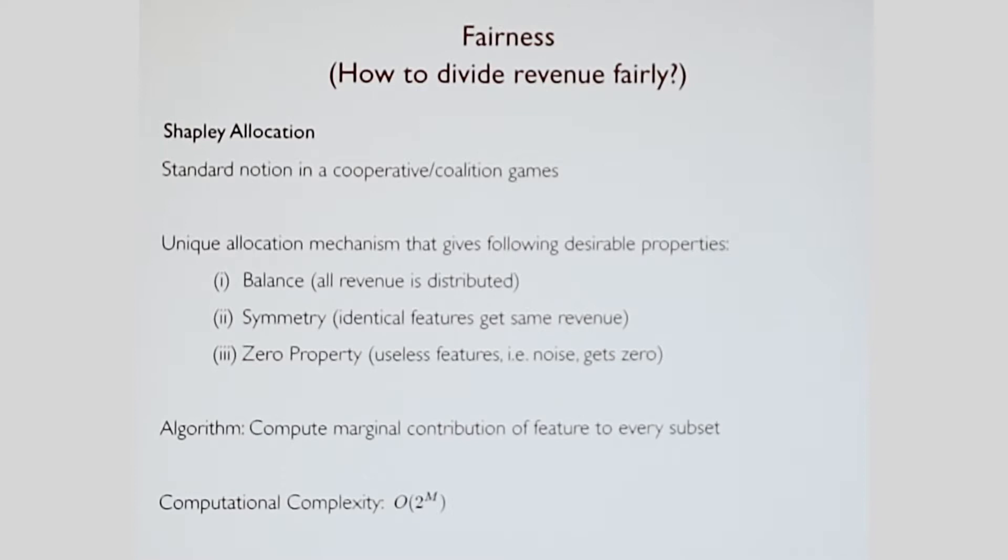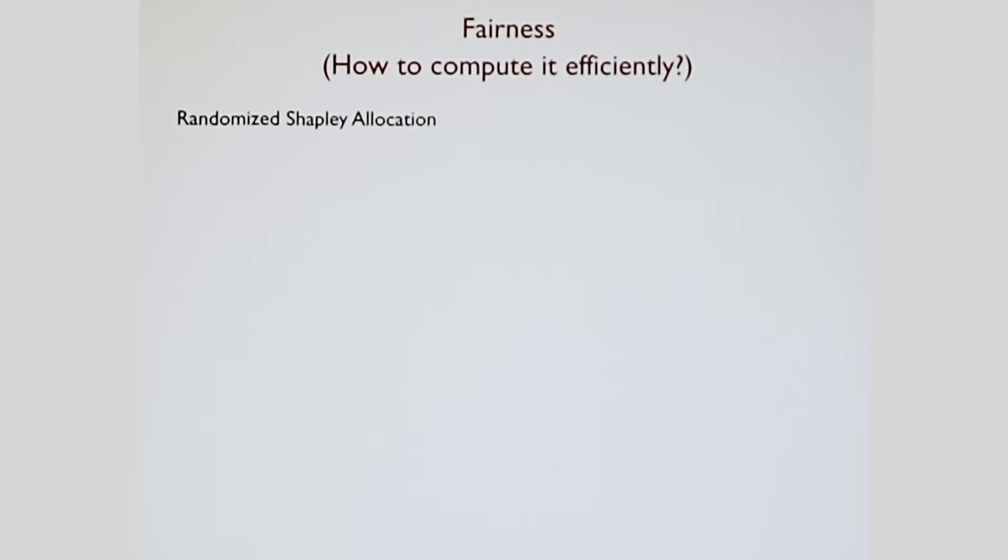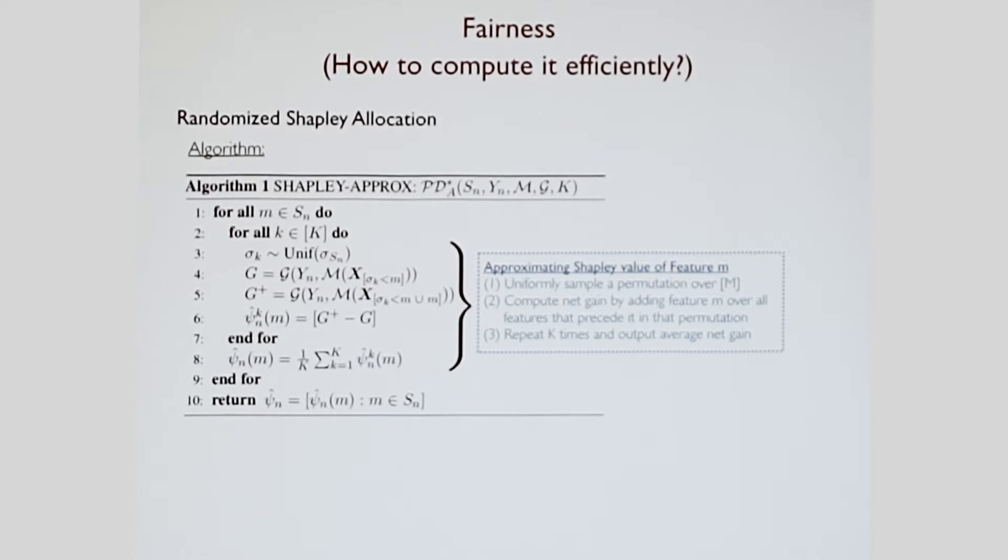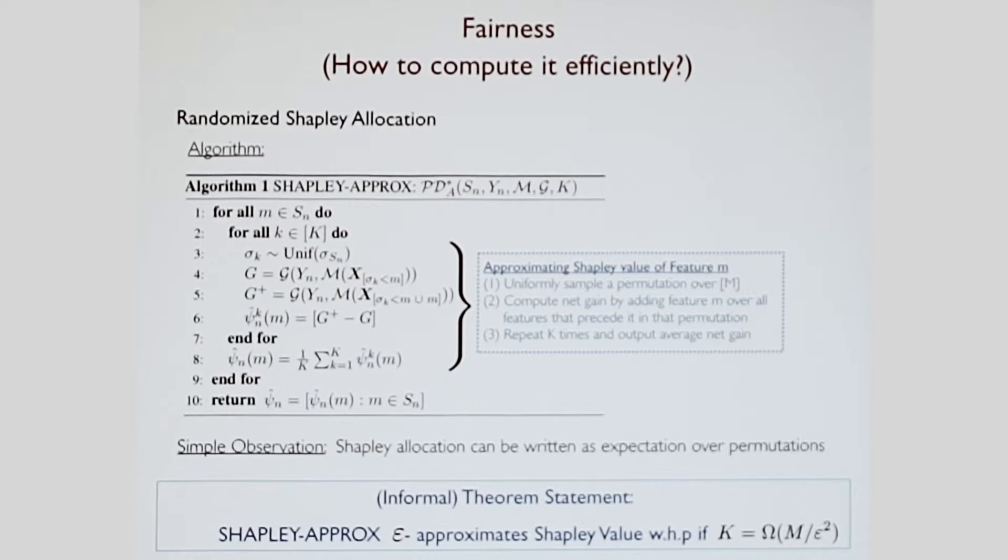So what do you do? Well, the good thing is you can do a randomized Shapley allocation. Forget about the math, just look at the words. It basically says you sample a permutation of M, and this is for computing the Shapley allocation of features small M. I sample a permutation of big M. I compute the net gain of feature M over every feature that came before it in the permutation. I do this K times and I average the net gain. That's my approximate Shapley allocation. Why is this a good idea? It's because the Shapley allocation can be written as an expectation over all of these permutations. If you apply pretty standard concentration equality, you actually get exponential concentration. The Shapley approach gives you an epsilon approximation of the Shapley value as long as K is of the order M over epsilon squared.